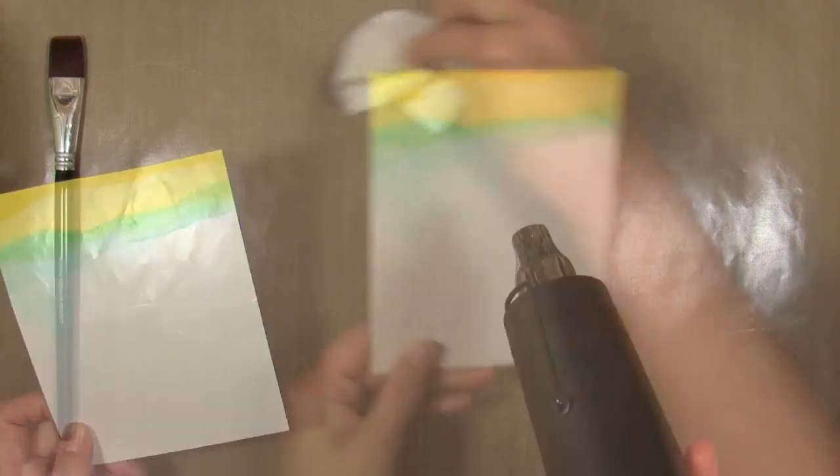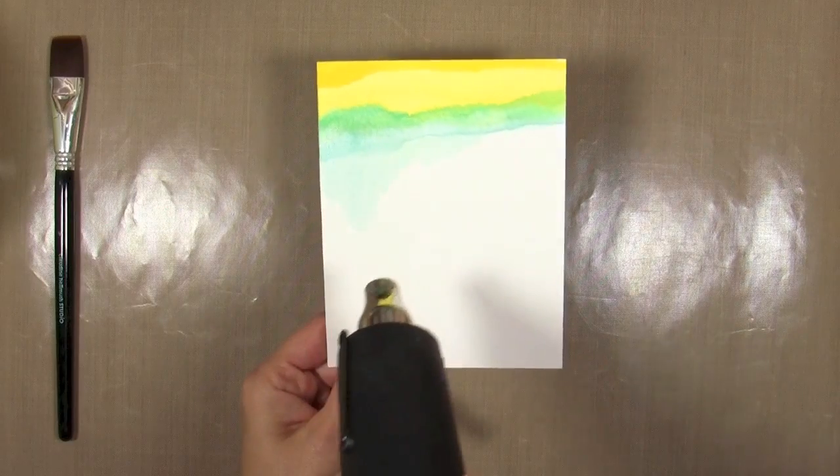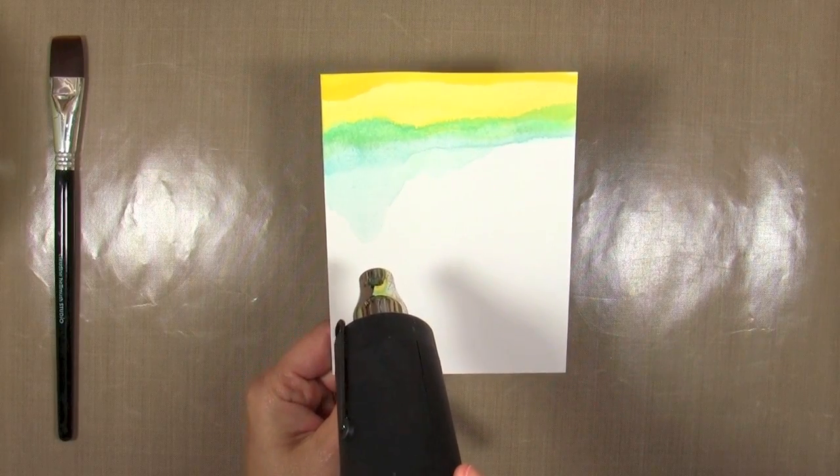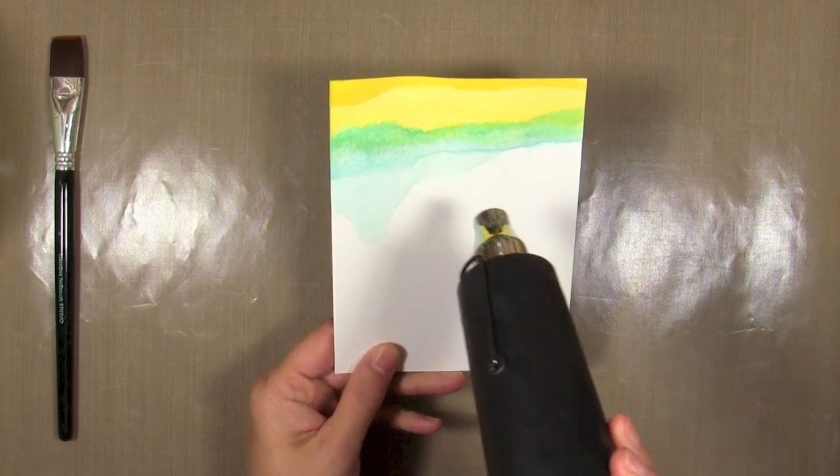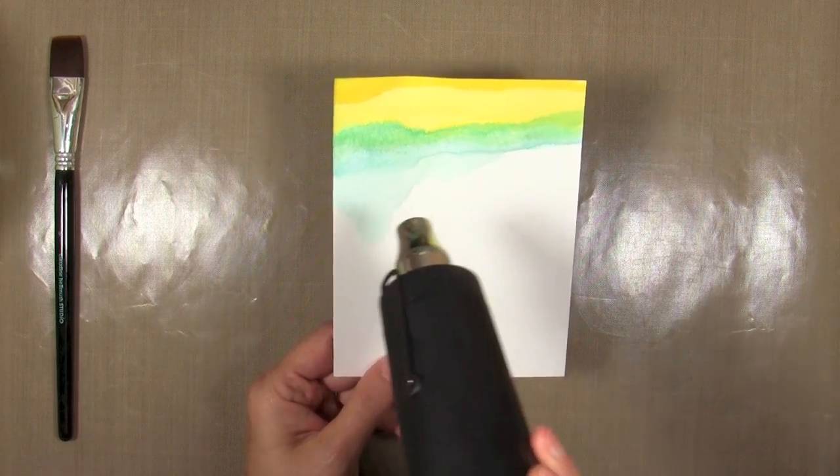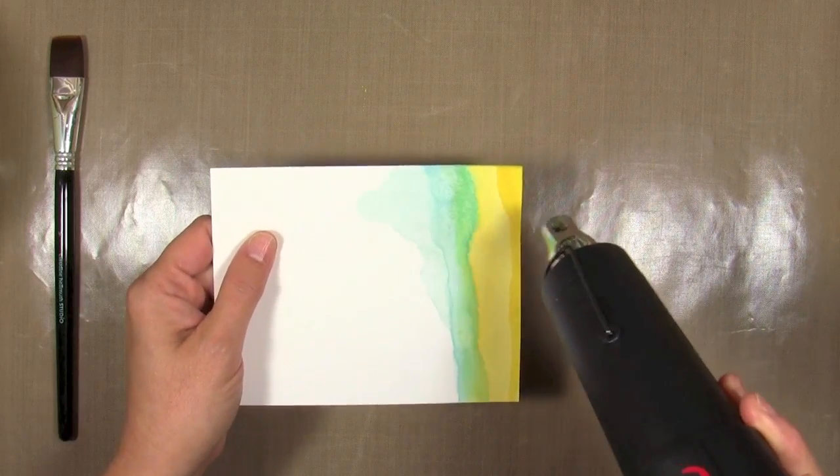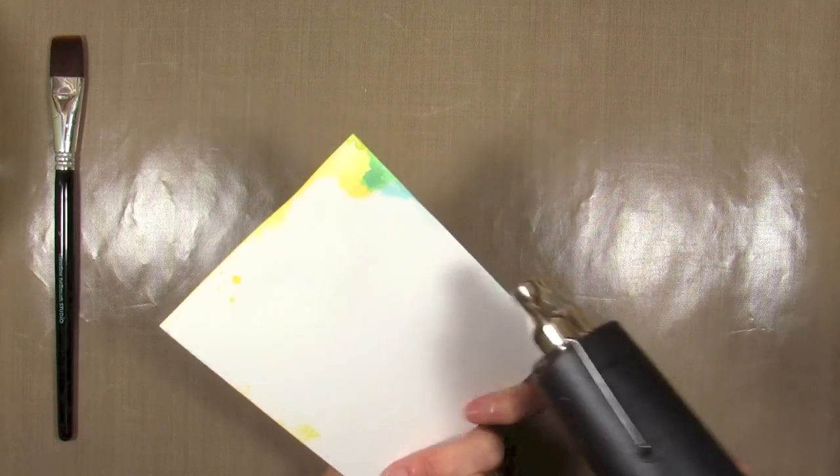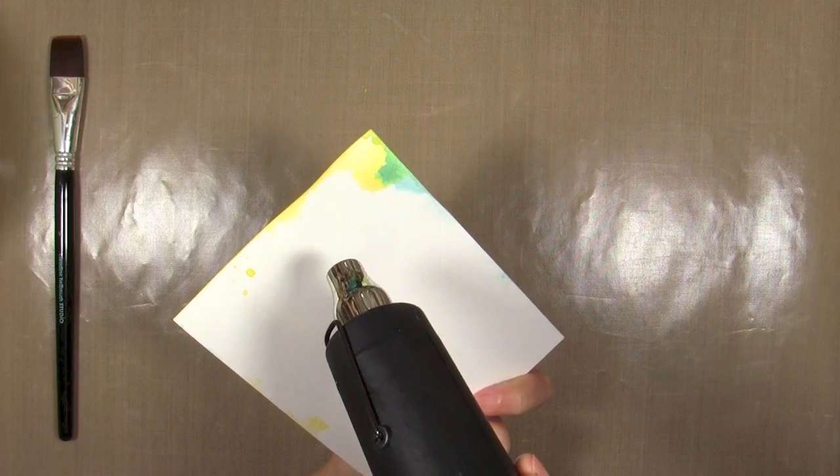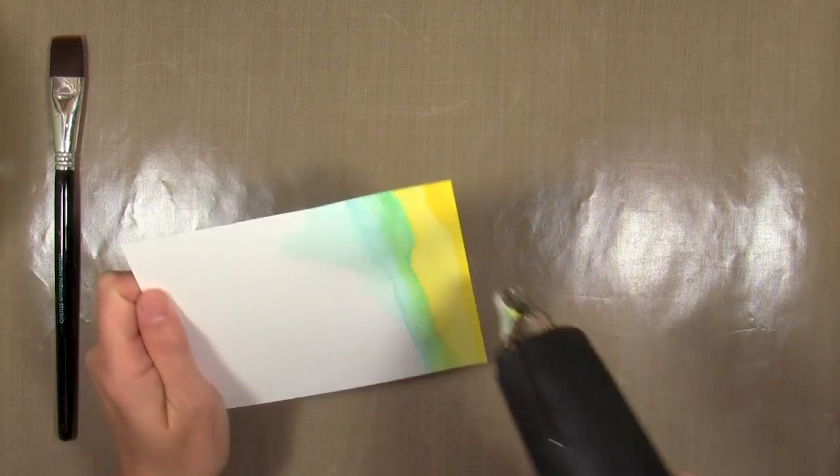It cleans up pretty well with a paper towel and baby wipe off the Teflon sheet. Your hands will clean up well with a baby wipe, but your fingernails or any hard surfaces, that paint will dry permanently on them, including metal. I'm going to go ahead and dry this.